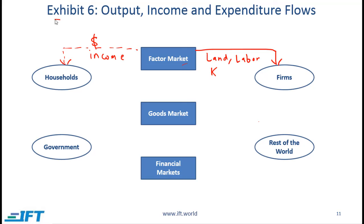Exhibit 6 in the curriculum combines the various items we have been discussing. There are three markets: the factor market, the goods market, and financial markets. Through the factor market, households provide factors of production — land, labor, and capital — to firms. In return, the firms pay households, and income flows back to the households.